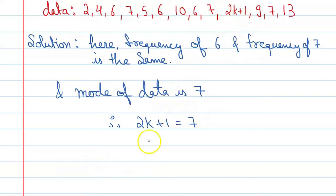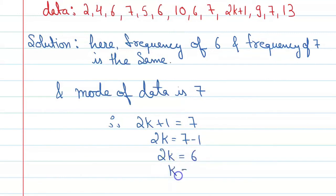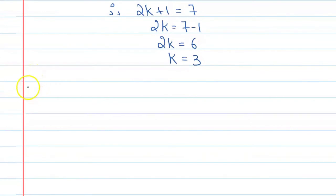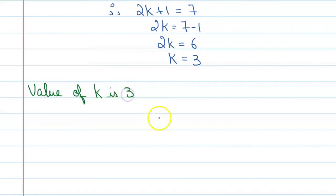So, solving for k: 2k is equal to 7 minus 1, which gives 2k equals 6, therefore k equals 3, that is 6 divided by 2. So our final answer is: value of k is 3. The correct option is A.